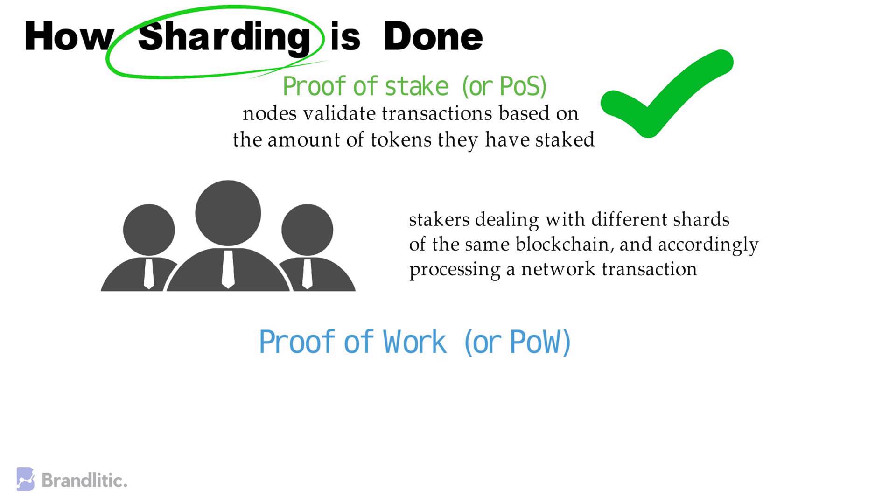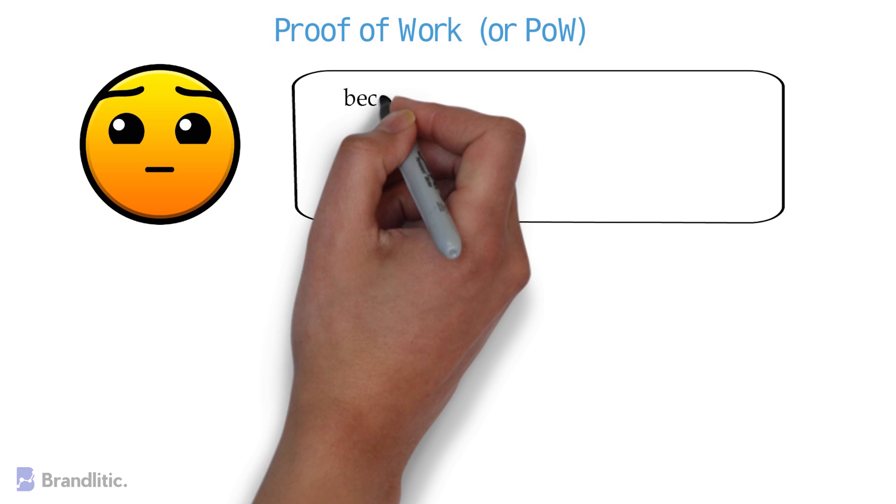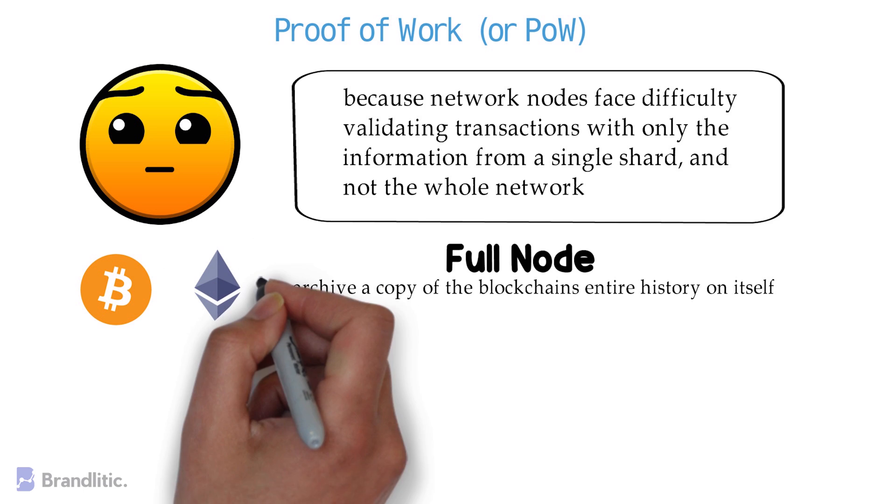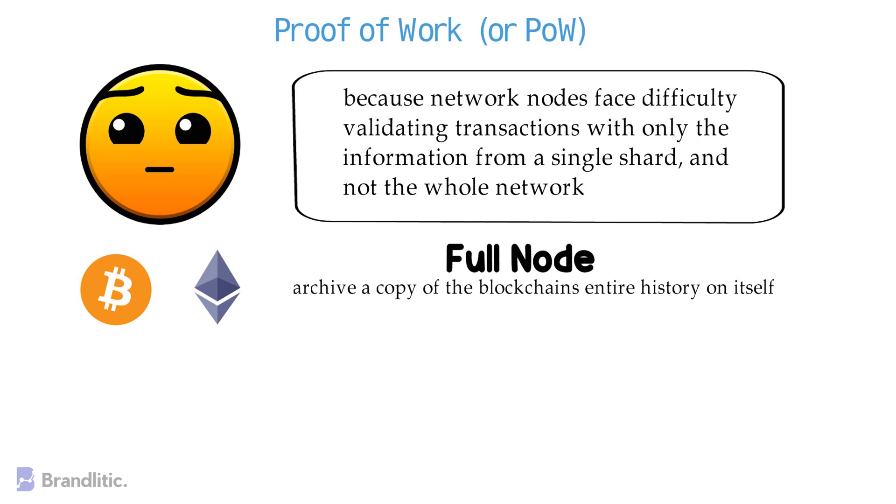As simple as it may sound in PoS, the same isn't true when it comes to PoW. Implementing sharding on a Proof-of-Work or PoW network is very difficult. Why? Because network nodes face difficulty validating transactions with only the information from a single shard and not the whole network. When it comes to Proof-of-Work, the most common type of node is a full node. Here, a full node archives a copy of the blockchain's entire history on itself. For larger networks like Bitcoin and Ethereum,